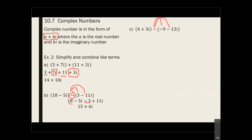this is what I have: 4 plus 3i plus 9 plus 13i. A negative times a negative is a positive, and a negative times a negative is a positive. So do you agree that I have 13 plus 16i? 4 plus 9 gives me 13, and 3i plus 13i gives me 16i.